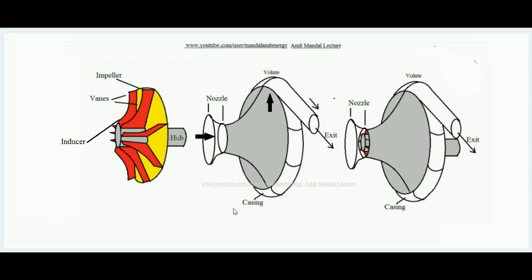First we will refresh ourselves by recalling what a centrifugal compressor is and how it works. A centrifugal compressor is a device — talking about an air compressor — which takes air from the atmosphere and by addition of work raises the pressure of air. It takes low enthalpy air and by addition of work done on the air, it increases the enthalpy.